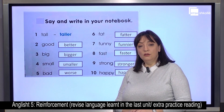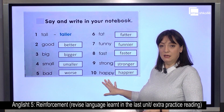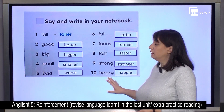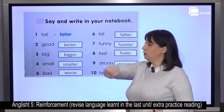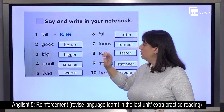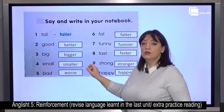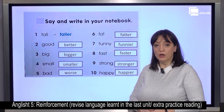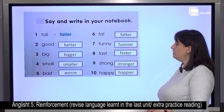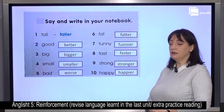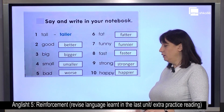Again, in the last unit we practiced some comparative and superlative forms. Do you remember this exercise? Let's go over that together. Tall — taller. Big — bigger. Small — smaller. Bad — worse. Fat — fatter. Funny — funnier. Fast — faster. Strong — stronger. Happy — happier.